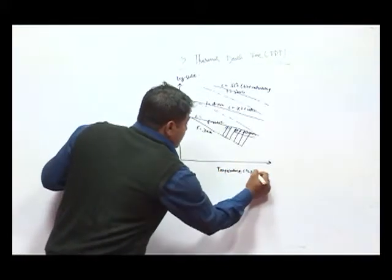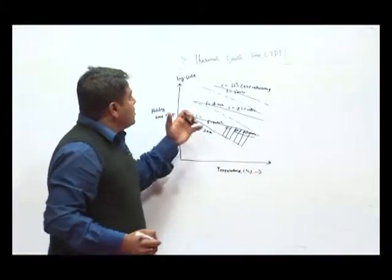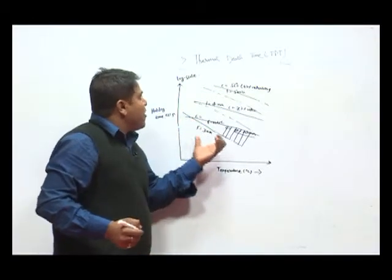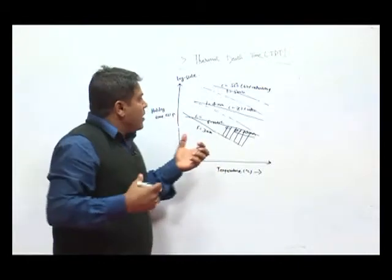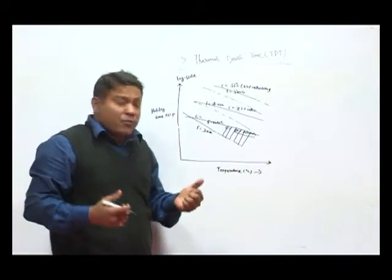So the point is that, on how much scale of F value and C value we are going to process and finalize the temperature and time combination of the food products.